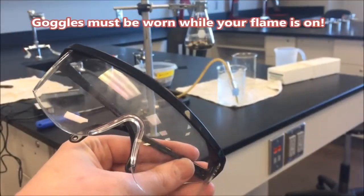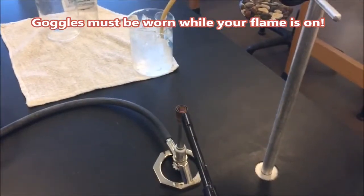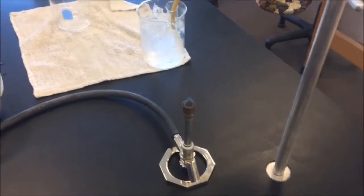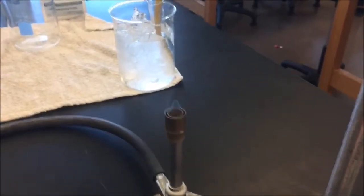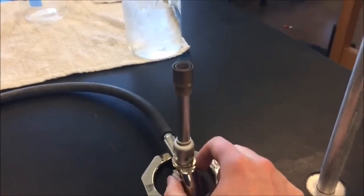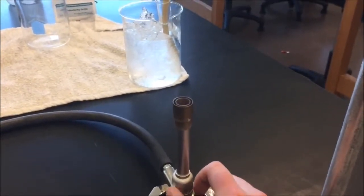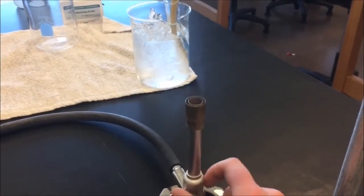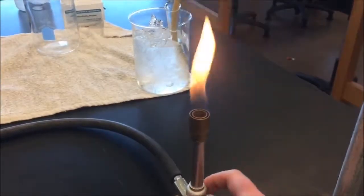When you're ready to start the Bunsen burner, make sure to put on your nifty goggles. So let's light the Bunsen burner. You're going to want a nice blue flame within a flame that kind of looks like this. You can adjust the bottom of the Bunsen burner to increase or decrease the amount of gas that's coming out of the Bunsen burner. And you can move this to change the temperature of your flame.